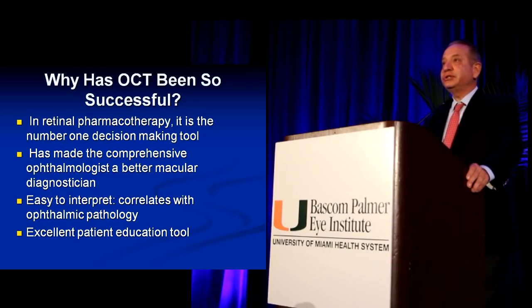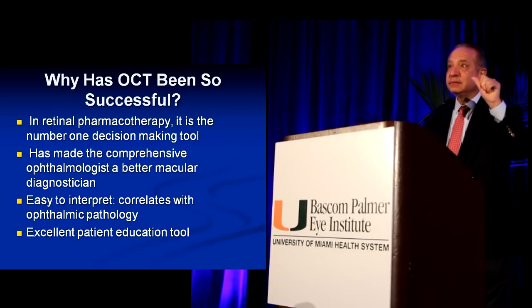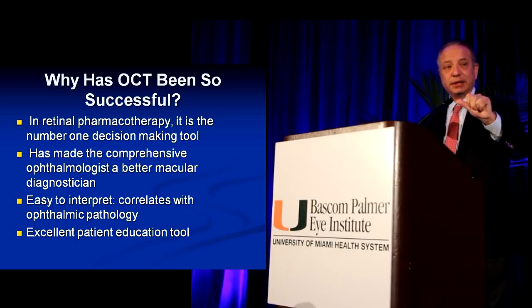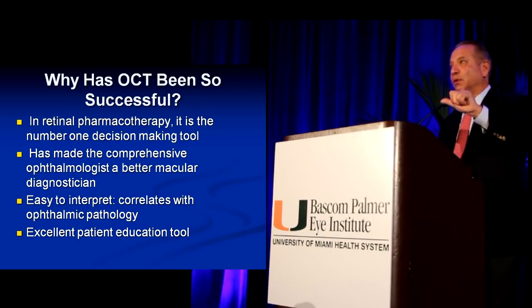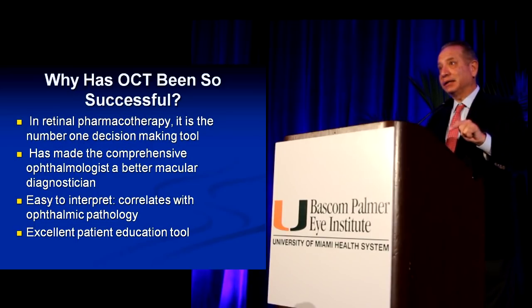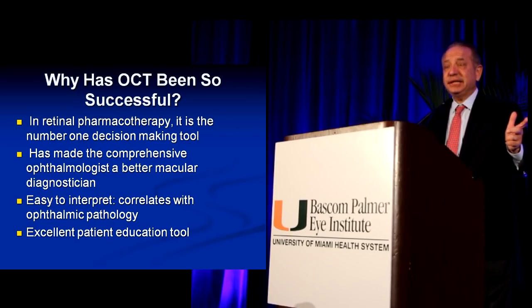Why has OCT been so successful in ophthalmology? The growth of retinal pharmacotherapy for macular degeneration and diabetic retinopathy has made it the number one clinical decision-making tool for the retina specialist. It has made the comprehensive ophthalmologist a much better diagnostician. Examination of the macula clinically is very difficult, particularly in eyes with small pupils or cataracts. OCT is easy to interpret and correlates well with ophthalmology.